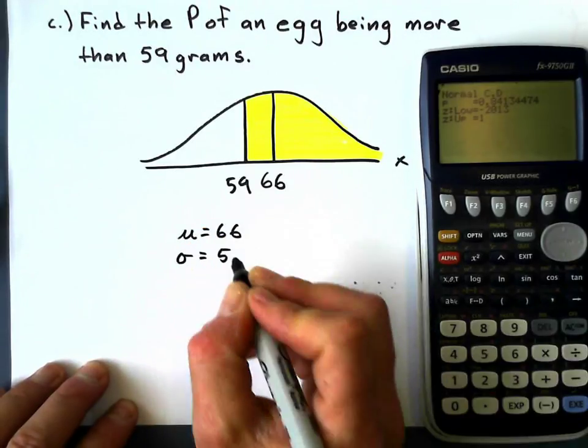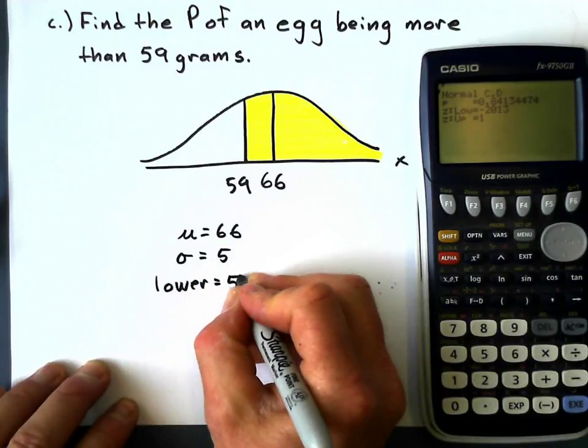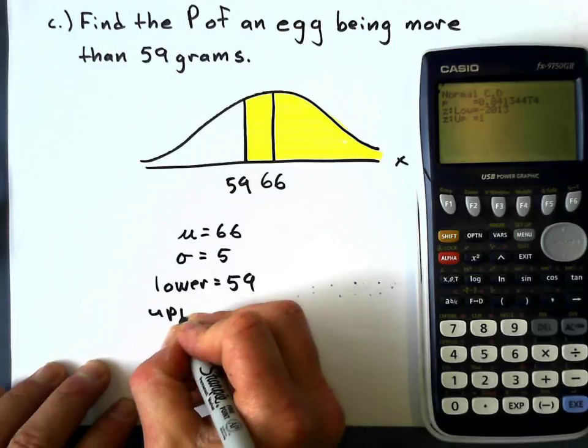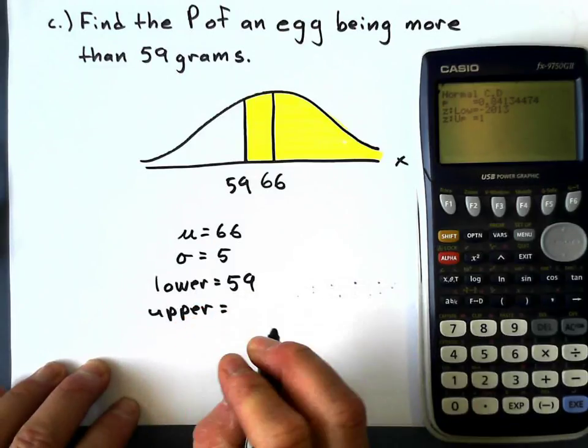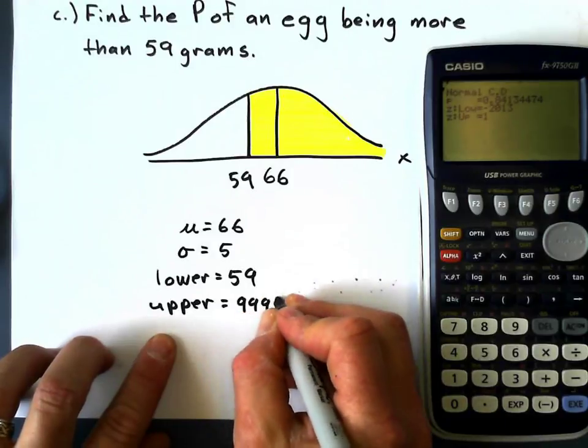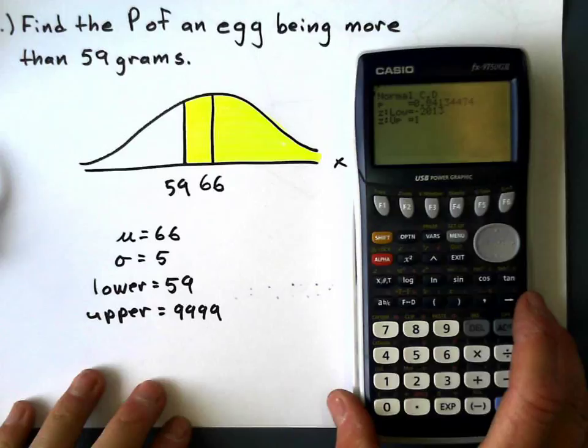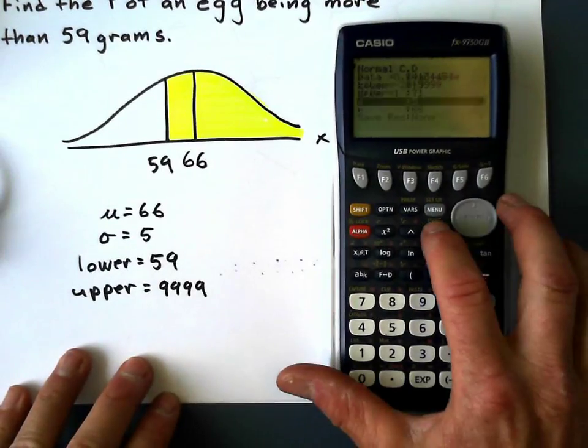Mean still 66, standard deviation still 5, lower value is 59, and my upper, just like the other one but in reverse, instead of negative 9999, I'm just going to give it a big positive value and give it four nines there. So I go back to my menu.